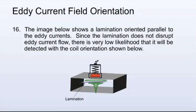The image below shows a lamination oriented parallel to the eddy currents. Since the lamination does not disrupt eddy current flow, there is very low likelihood that it will be detected with the coil orientation shown below.